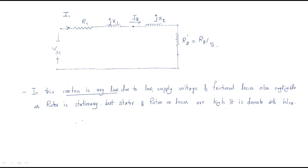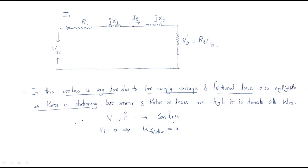Core loss is very low because voltage and frequency both affect core loss. Frictional loss is also negligible since the rotor is stationary — rotor speed is zero, so there is no friction. However, stator and rotor copper losses are high, which is why we perform this test.